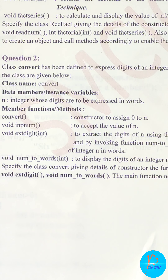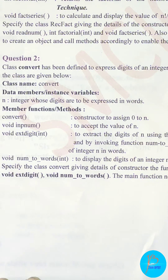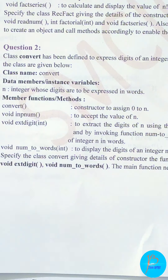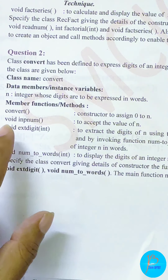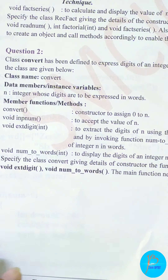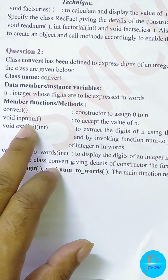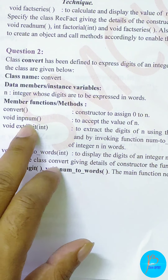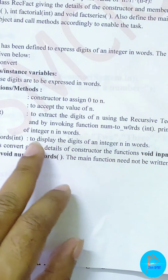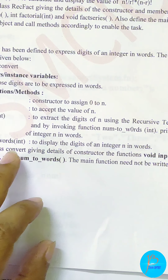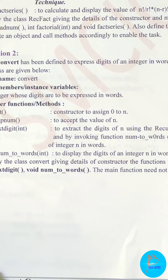Hello students, today we are going to start with the second problem of the recursion sheet. In this problem, a class 'Convert' is given which is used to express the digits of an integer in words. The class name is Convert, it has a single data member 'n', and three member methods: the constructor Convert, void inputNum to accept the value of the number, and void extDigit to extract digits using recursive technique.